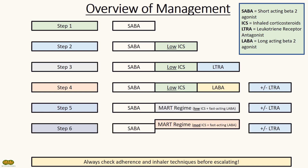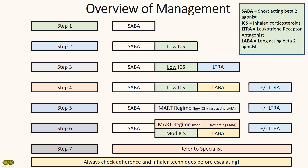Step 6 would be to increase the MART regime's inhaled corticosteroids dose to a moderate dose, or you can replace the MART regime with individual inhalers of moderate ICS and LABA. If the asthma is still uncontrolled after this step, refer the patient to the specialists. Do note that the management of asthma is prone to changes — it has changed twice during my five years of medical school, so it might be worth checking the guidelines regularly.